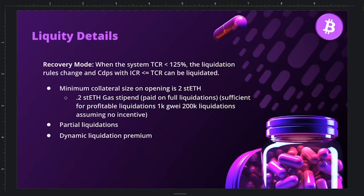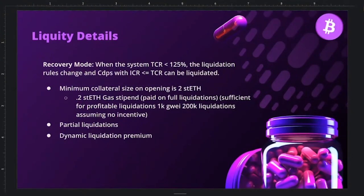Comparing to Liquity: Liquity has recovery mode at 150% whereas eBTC triggers recovery mode at 125%. Economic research with Risk DAO validated these parameters. The gas stipend for liquidations is 0.2 stETH (1e17 stETH), making liquidations profitable up to 1000 Gwei even at 200,000 gas. The system offers both partial and full liquidations with a dynamic premium designed to minimize bad debt while keeping liquidations profitable.